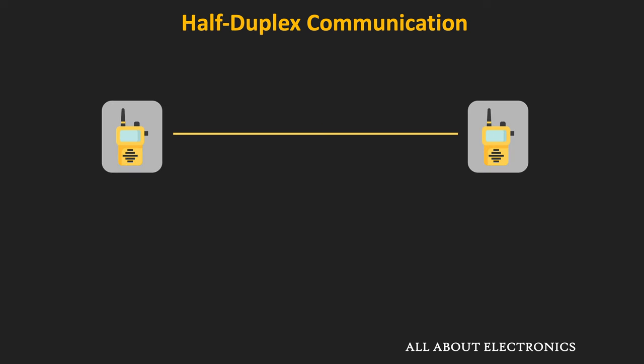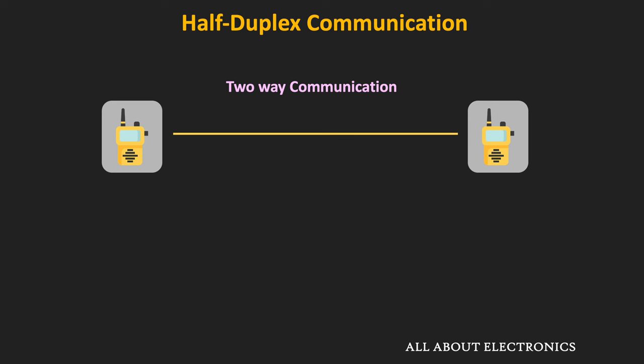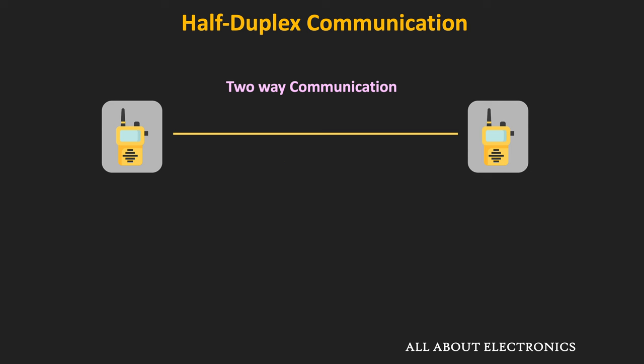The next type is half-duplex communication. Duplex communication is a two-way communication, but half-duplex does not allow bi-directional communication at the same time. At any given time, communication can happen only in one direction. Once that is over, only then is it possible to transmit data in the other direction. Simultaneous communication in both directions is not possible.